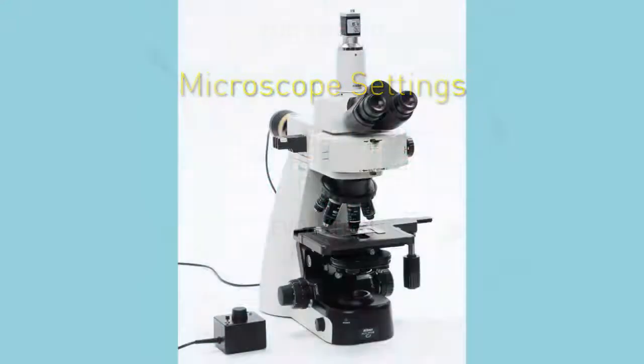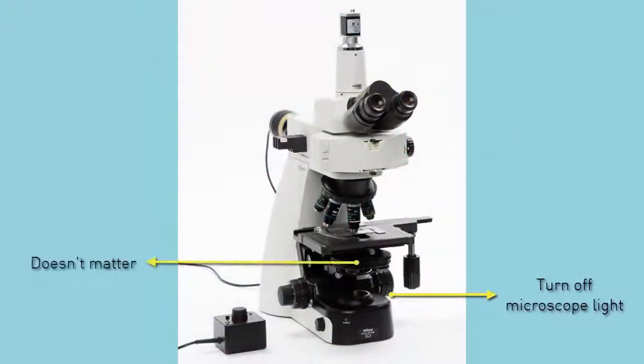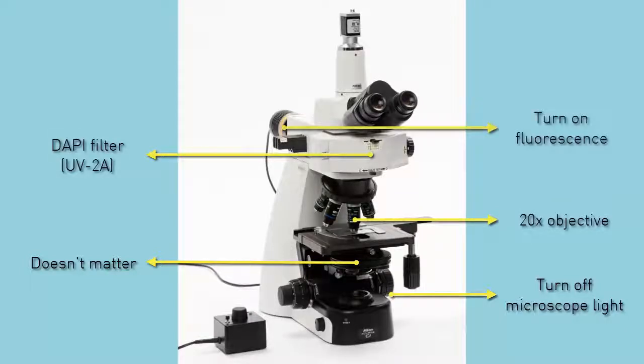Microscope settings. For vitality analysis, turn off the microscope light. The condenser position doesn't matter. We'll use the 20x objective and the fluorescent module with a DAPI filter.